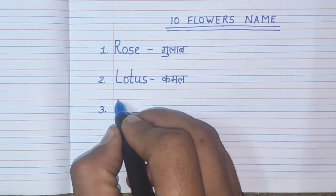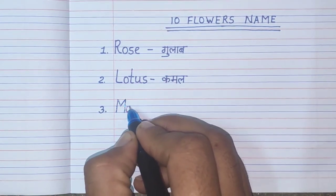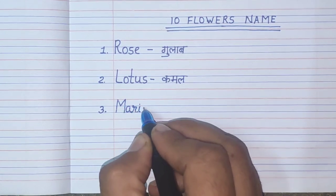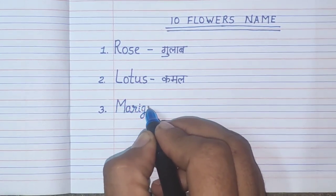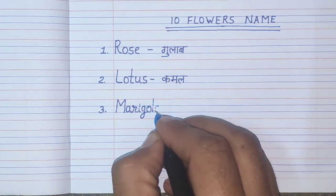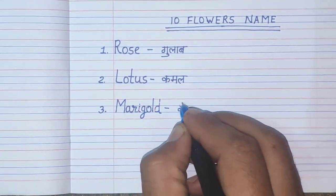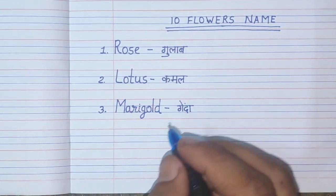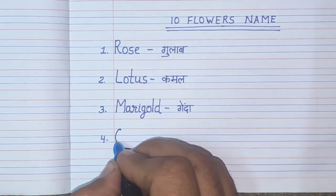Number 3. M-A-R-I-G-O-L-D. Marigold. Marigold means Genda.